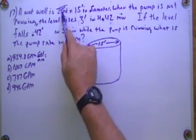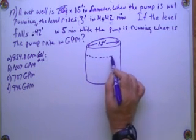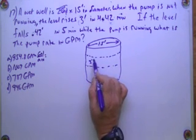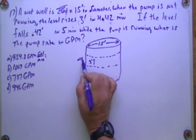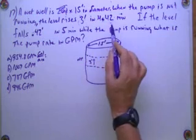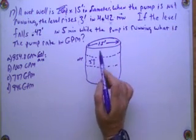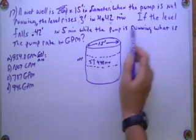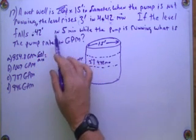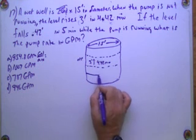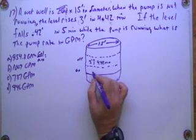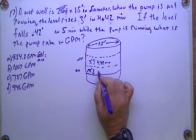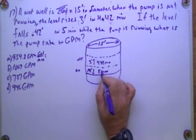So the depth is not going to matter. Because the water level rises 3 feet and the pump's off. Right? The pump is not running, it rises 3 feet in 4.42 minutes. The level falls 0.42 feet in 5 minutes and the pump's on. So when it's on, it's going to go down 0.42 feet in 5 minutes. Alright, we're getting somewhere.